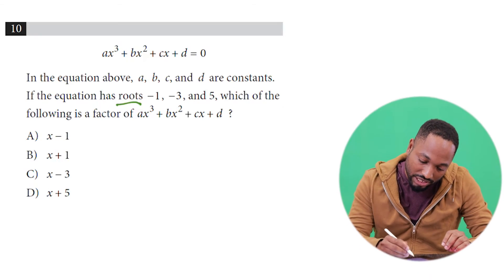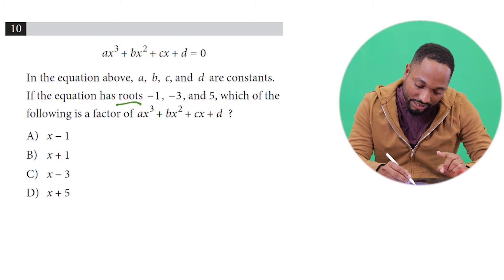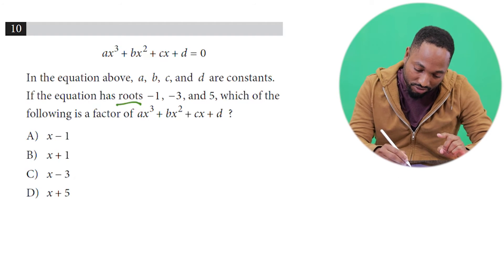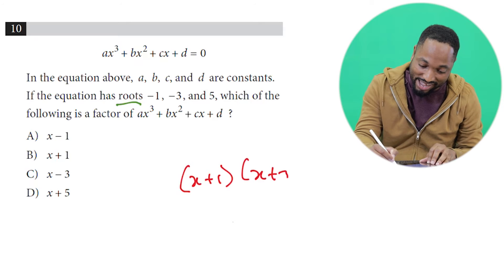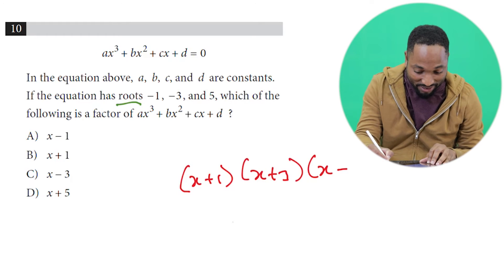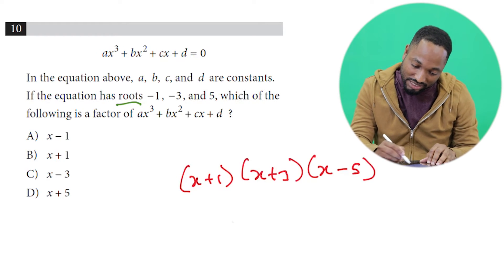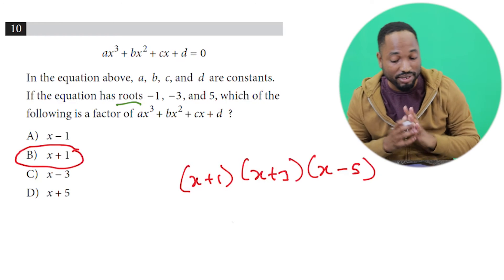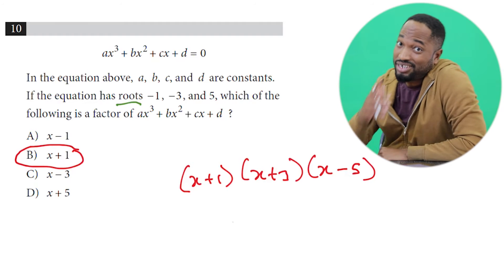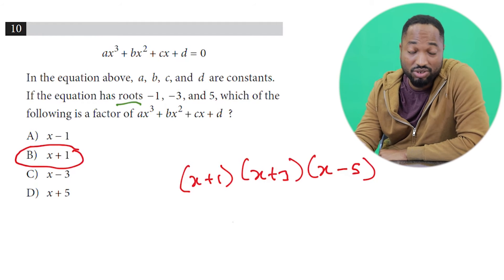So they told us the roots for this one was -1, -3, and 5, so the factors would be x + 1, x + 3, and x - 5. So which one of these are in the answers? It's B. B can be a factor of this polynomial. These questions are extremely easy. You should be doing them in seconds in the exam.